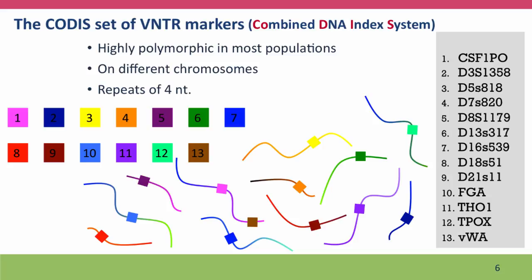VNTR markers occur at thousands of places around the chromosomes, but a particular subset of 13 have been chosen for legal and forensic work. This is called the CODIS set of VNTR markers — there's actually another set used in some countries. CODIS stands for Combined DNA Index System. These particular VNTR loci were chosen because they're highly polymorphic, not just in Europeans but in most populations around the world. They're on different chromosomes, which — as you'll learn in Module 7 — maximizes the chance that different children of the same parents will have different combinations.